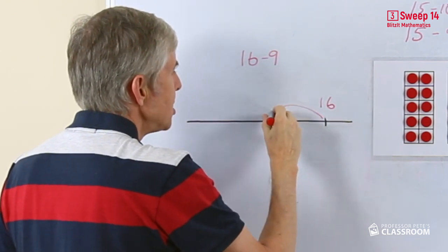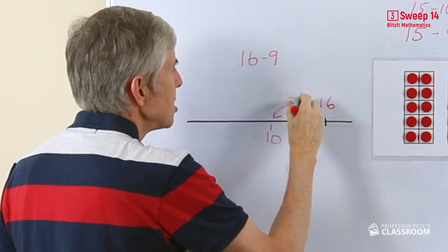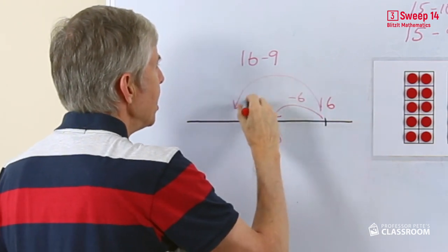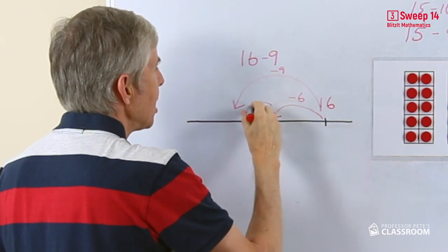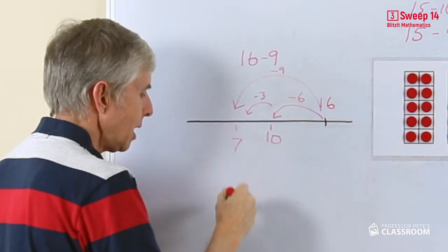We will go back to 10 first, there's 10, that's taking away 6, we're taking away 9, that means taking away another 3 after we get to the 10, 10 take away 3 is 7.